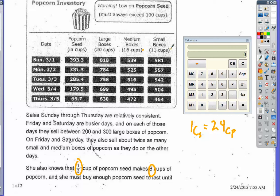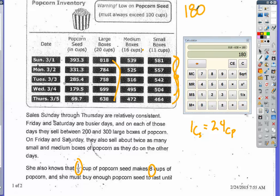For the typical five-day period, looking at large boxes: I started with 818 boxes and ended with 638, so I sold 180 large boxes over five days. Each box has 20 cups, giving a total of 3,600 cups of popcorn from large boxes during the weekdays.